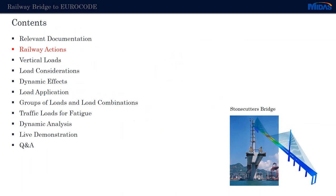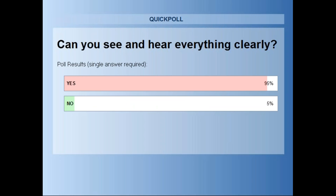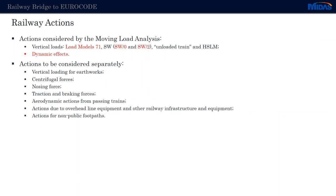Now let's look into the actions for railway bridges. In the moving load analysis in MIDAS Civil, the loads that can be considered are Load Model 71, SW0, SW2, the unloaded train, and the high-speed load models, as well as the dynamic effects for these load models. There are also actions that need to be considered separately, such as vertical loading from earthworks, centrifugal force, nosing force, traction and braking forces, aerodynamic actions from passing trains, actions on overhead line equipment, and also actions on non-public footpaths.